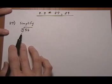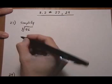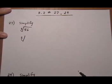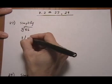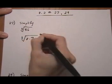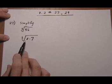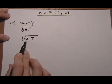So first we want to simplify cube root of 56. Well let's rewrite this in factored form so we can see if there are any perfect cubes in there. So that'd be cube root of 8 times 7, and then I notice that cube root of 8 is a perfect cube.